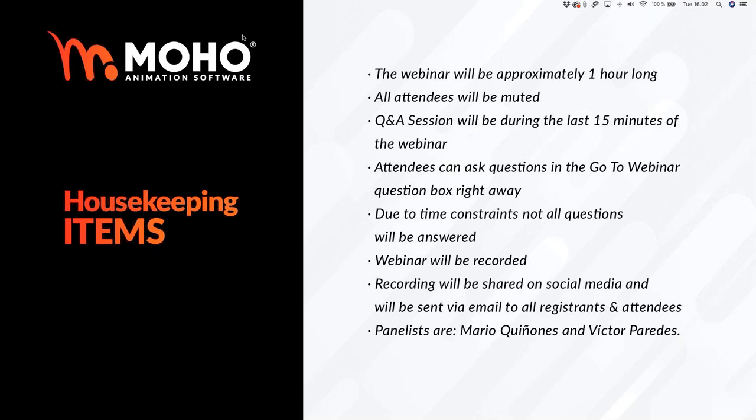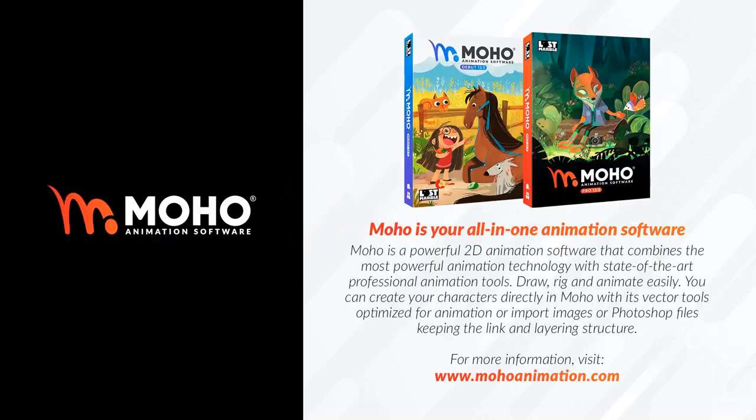The panelists for this webinar are Mario and Victor Paredes. For those of you connecting with us for the very first time, Mojo is your all-in-one animation software. It's a powerful 2D animation software that combines powerful animation technology with state-of-the-art professional tools to draw, rig, and animate easily. You can create characters directly in Mojo with its vector tools or import Photoshop files keeping the layer structure. For more information, visit Mojoanimation.com.